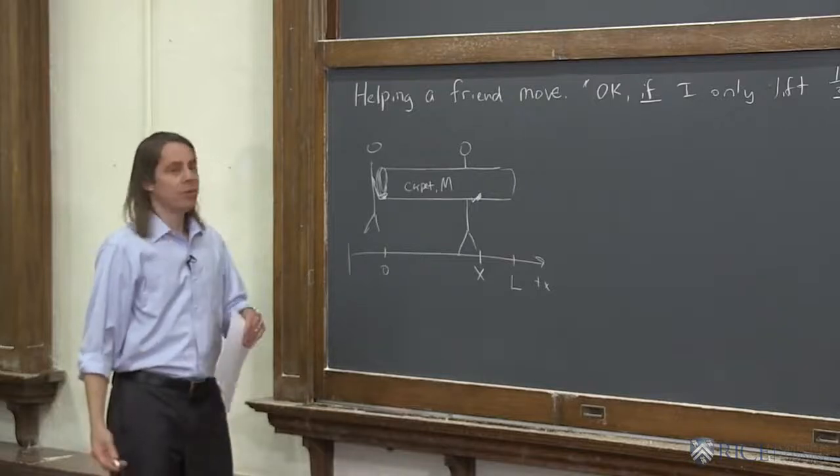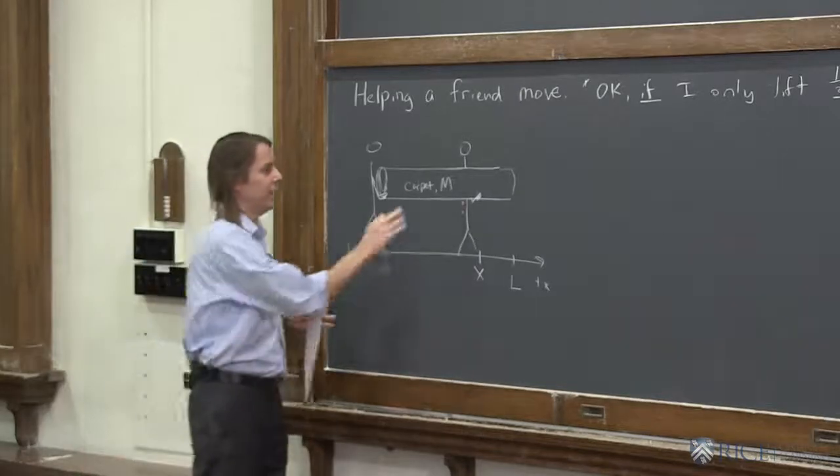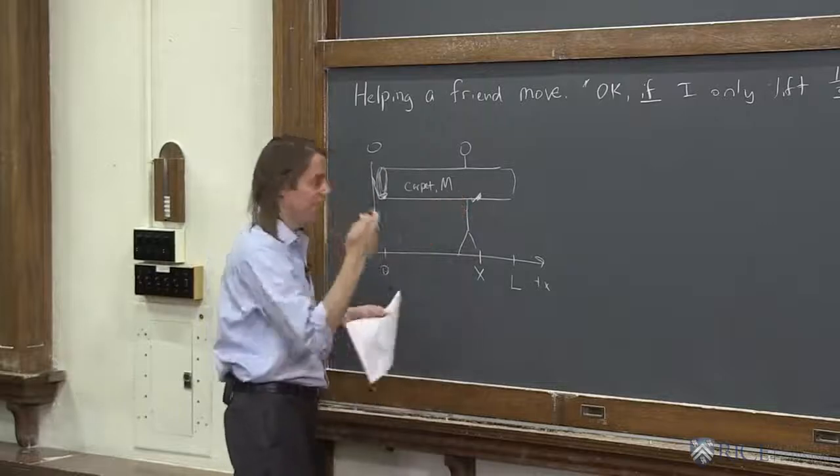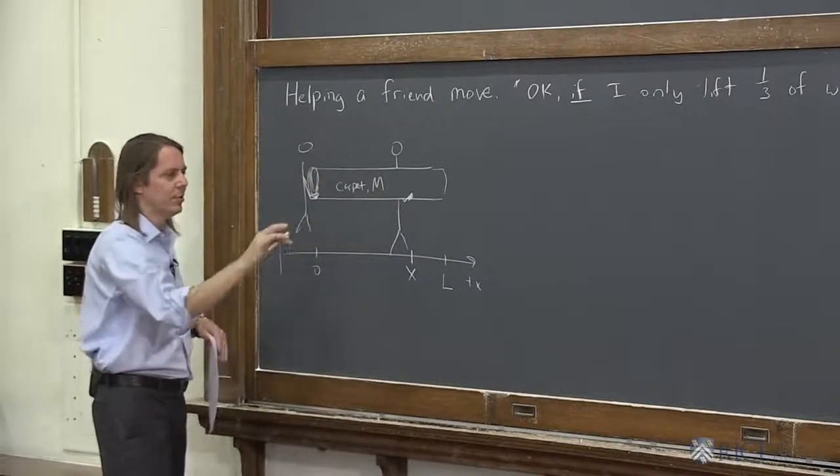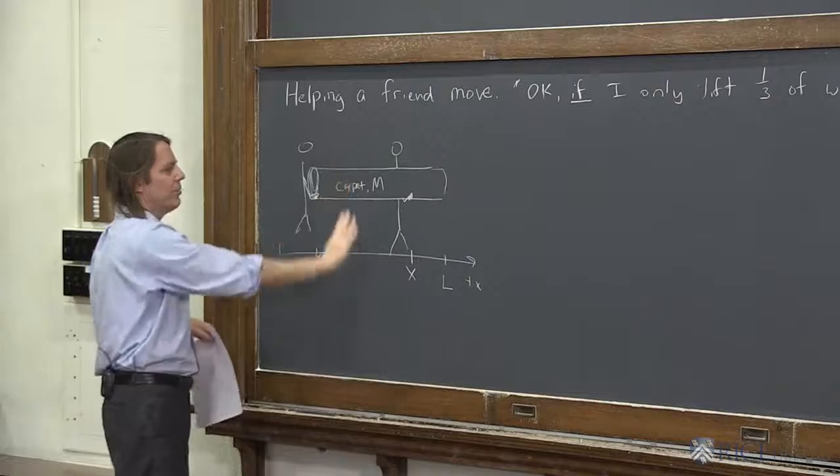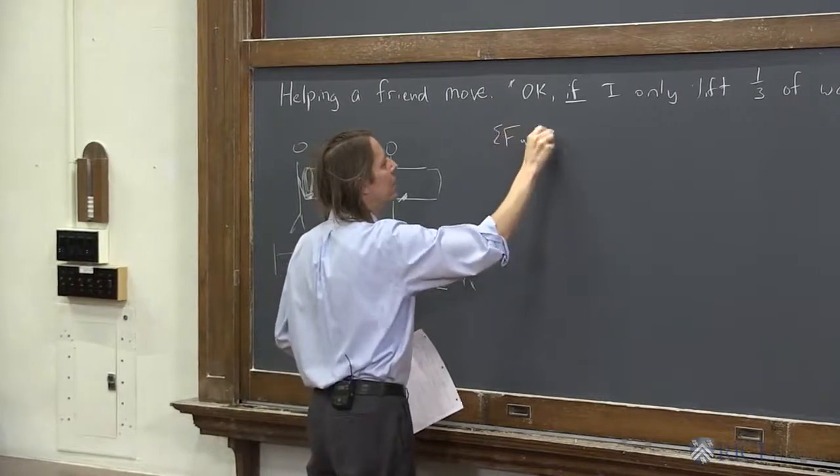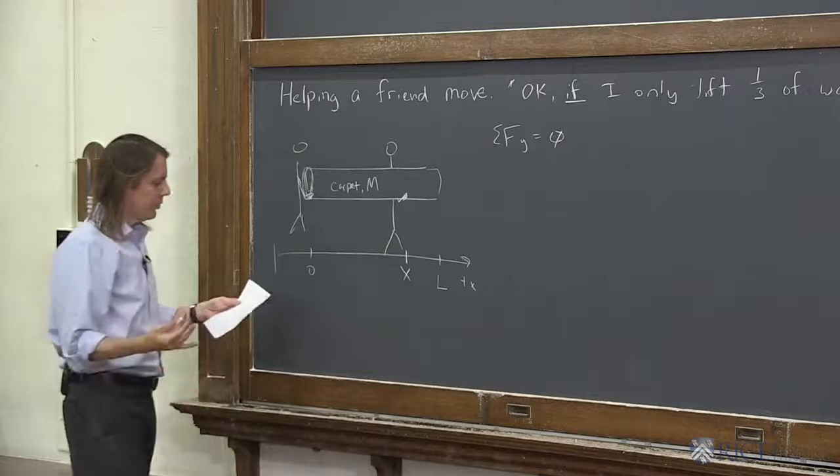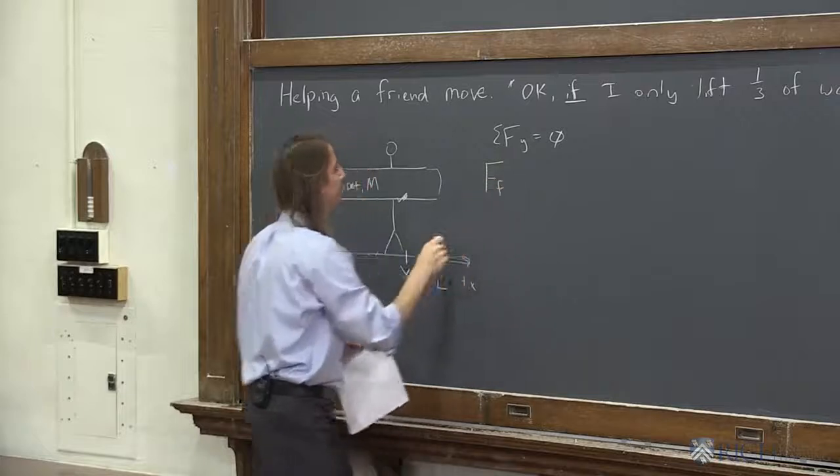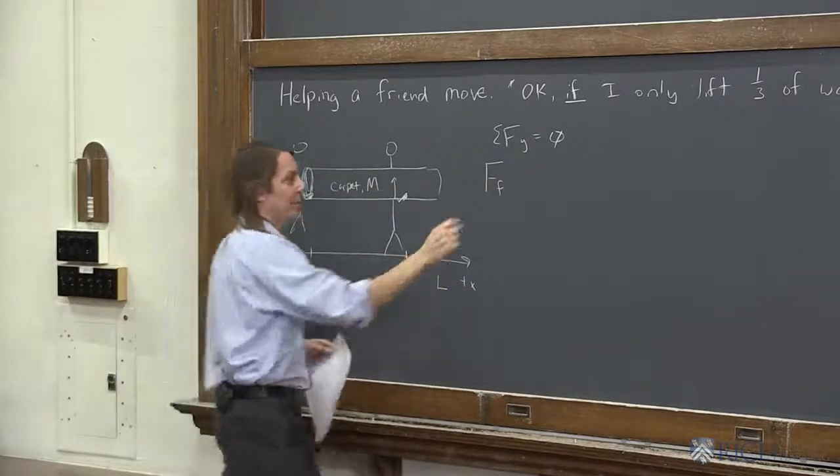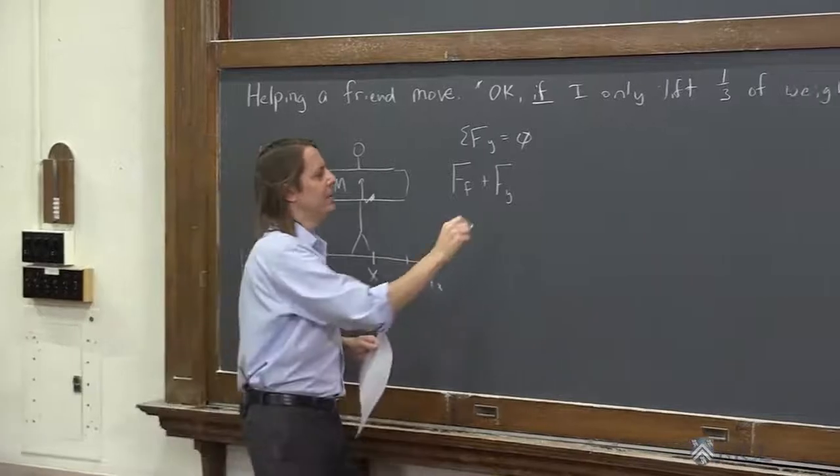All right, and now we just got to solve it. It's a statics problem. So imagine we're not moving it yet. We're just standing there perfectly still holding this. And I want this person to be two thirds of the weight and me to be one third of the weight. So statics. We can do the sum of the forces in x, y, and z equals zero. Sum of the torques equals zero. In this case, we really just care about moving it in the y. We're balancing our forces in the y. So let's say sum of the forces in the y equals zero. So the forces in the y, you have the force applied by my friend here, F friend, and that's up on the carpet. And then you have the force I'm having to apply, Fy, here, up on the carpet. And then you have mg down.